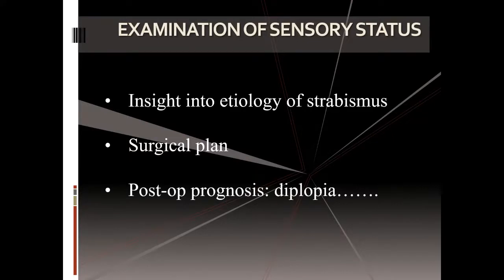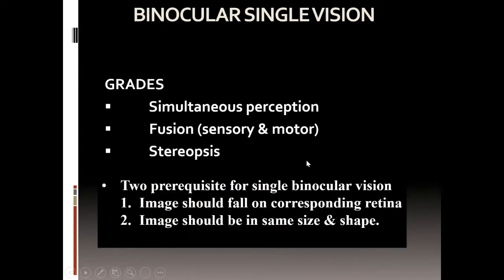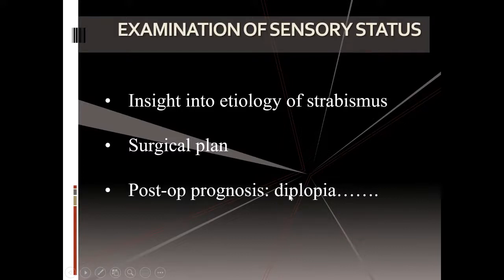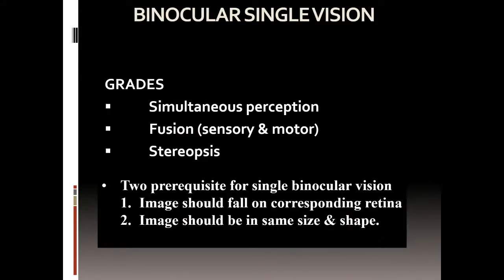We come to the second part: examination of sensory status. Sensory status is about whether the problem was since birth or acquired. If there is diplopia and presence of binocular vision, it means it was not congenital — it developed later. It also tells us whether the patient may develop diplopia post-operatively. If the patient has decompensated exotropia at adult age, the chances of post-op diplopia are higher; but if it is infantile strabismus, very early in age, then the chances of post-op diplopia are very low.